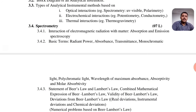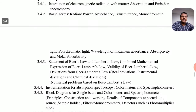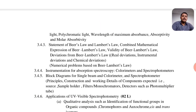Spectrometry is a very important topic for the analysis of unknown compounds, giving us the correct structure of the compound. It involves the interaction of electromagnetic radiation with matter, absorption and emission types of spectroscopy. Basic terms covered include radiant power, absorbance, transmittance, monochromatic light, polychromatic light, wavelength of maximum absorbance, absorptivity, and molar absorptivity. Beer's and Lambert's law and the combined mathematical expression are very important in UV-visible spectroscopy.